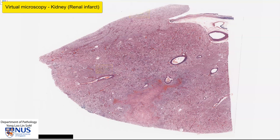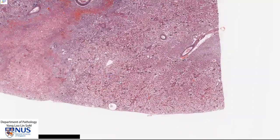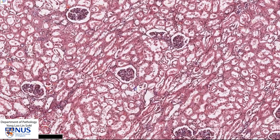The area of abnormality is this roughly wedge-shaped area here, with the pointed end going towards the medulla, and there are some blood vessels here. Before we look at the area of pathology, let's look at some of the normal-appearing renal cortex.